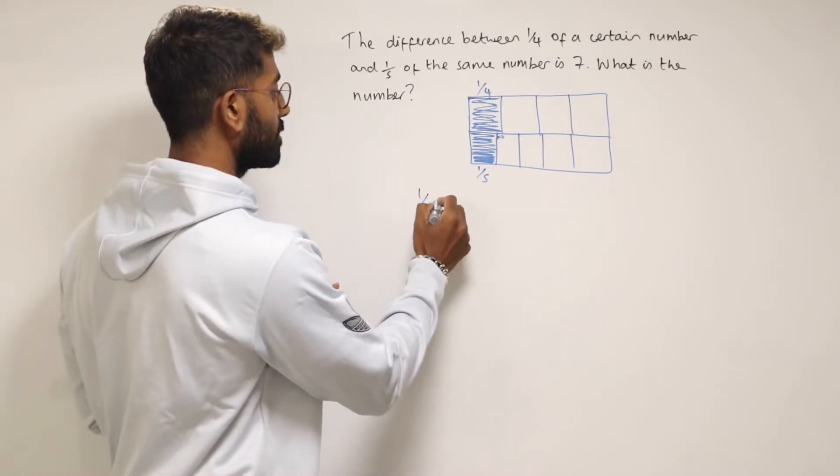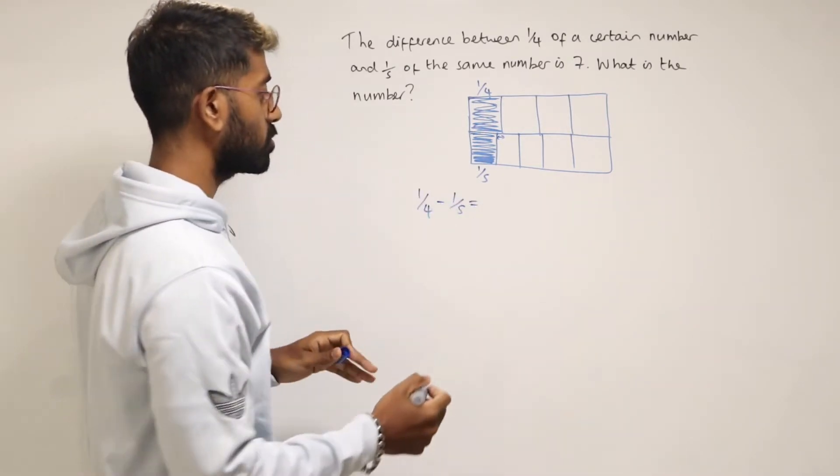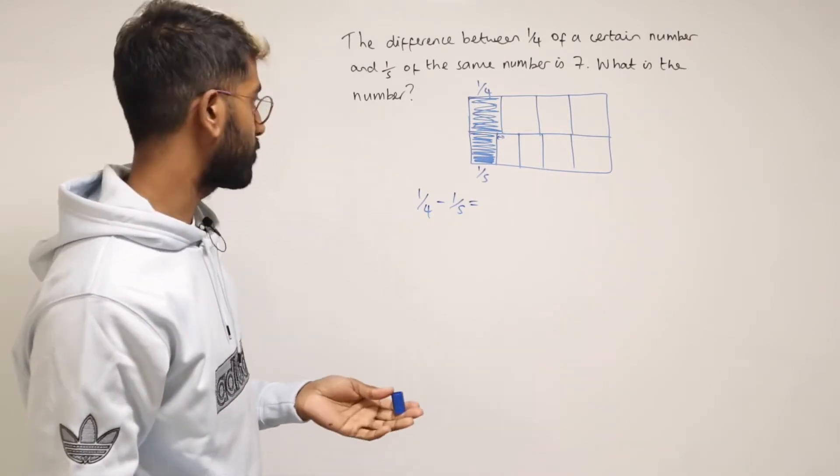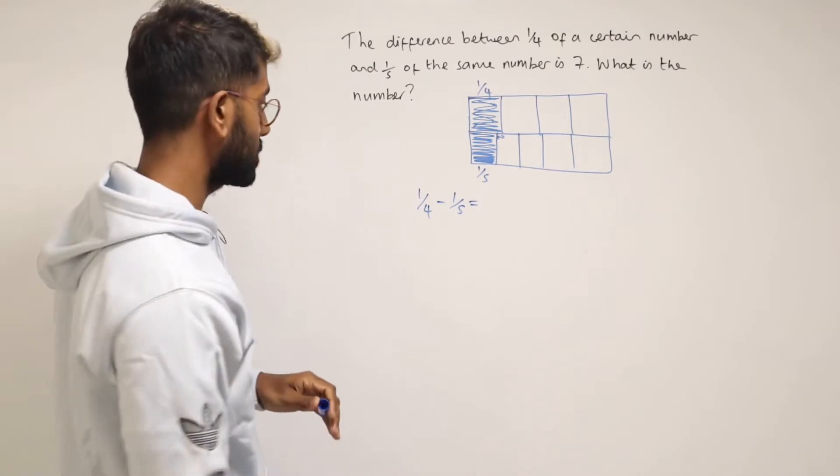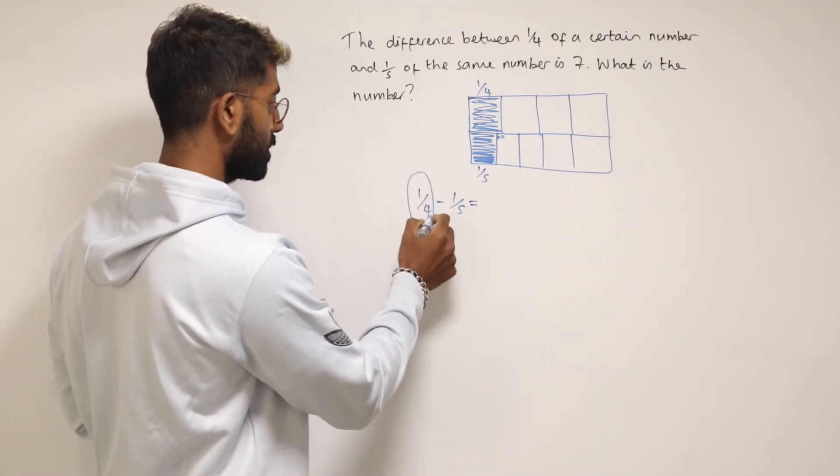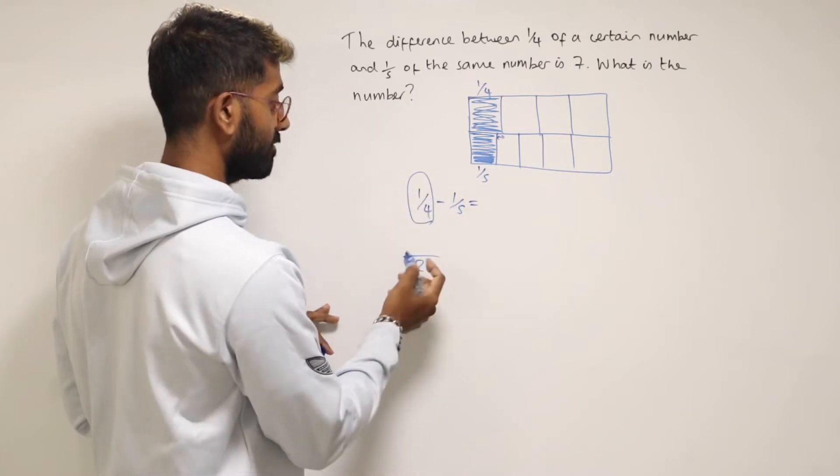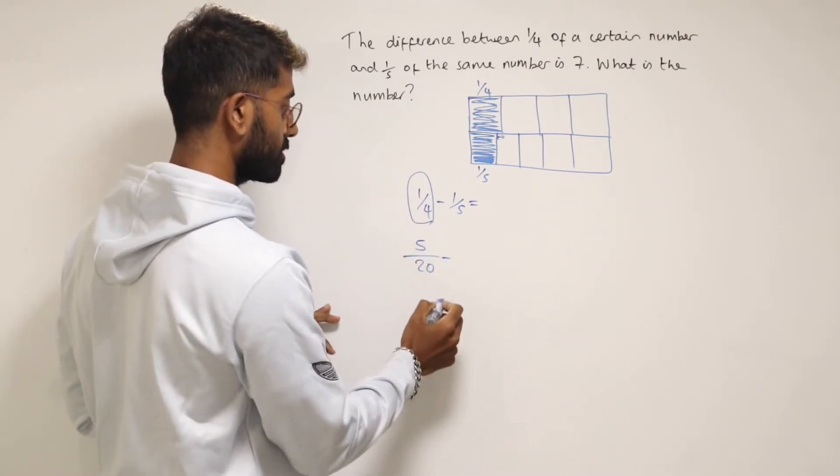So what we could do to work out how big it is, is just work out what a quarter minus a fifth is. So to subtract these fractions, we need the same denominators. So we can multiply the top and bottom of this fraction by five to turn it into twentieths. So that would be five twentieths.